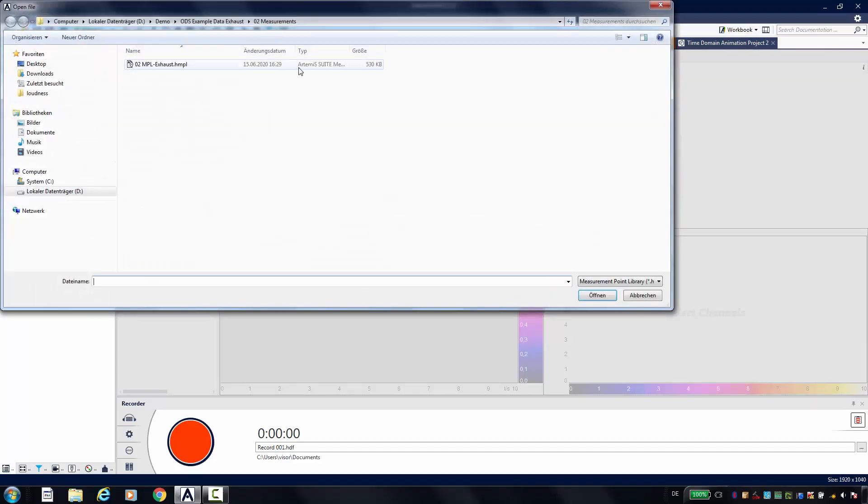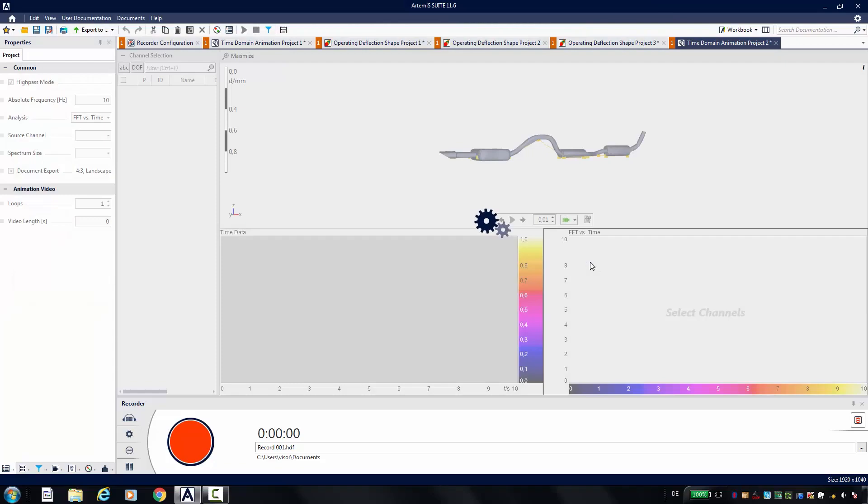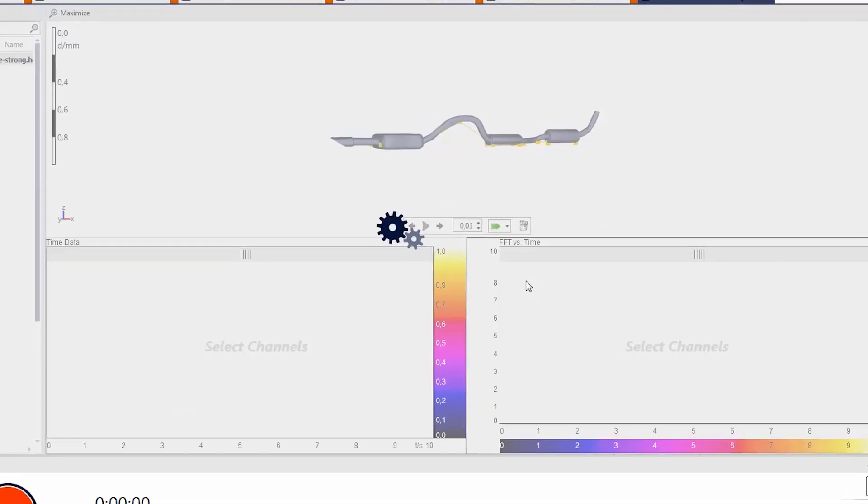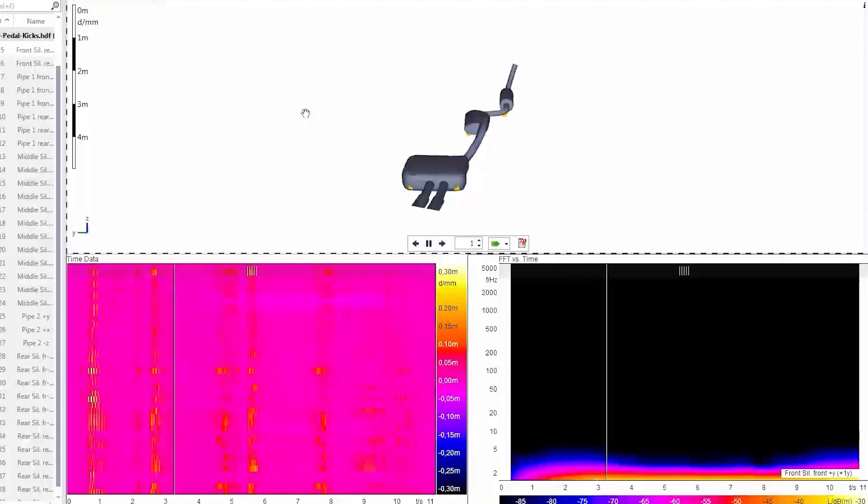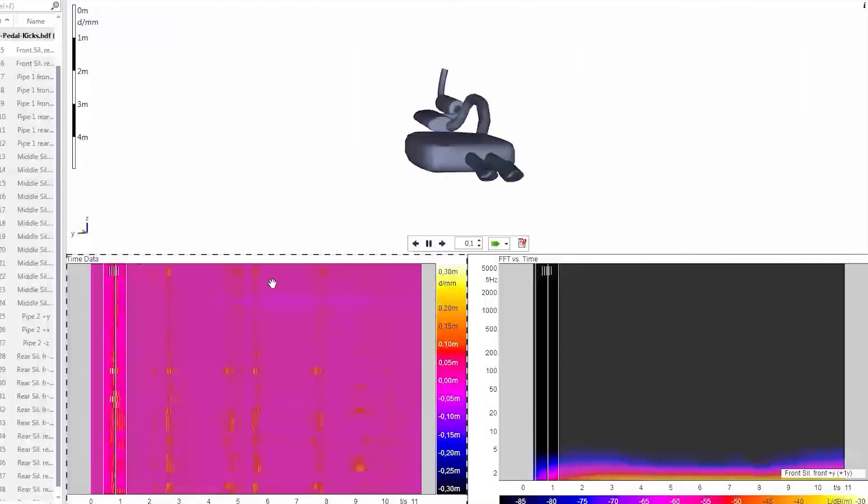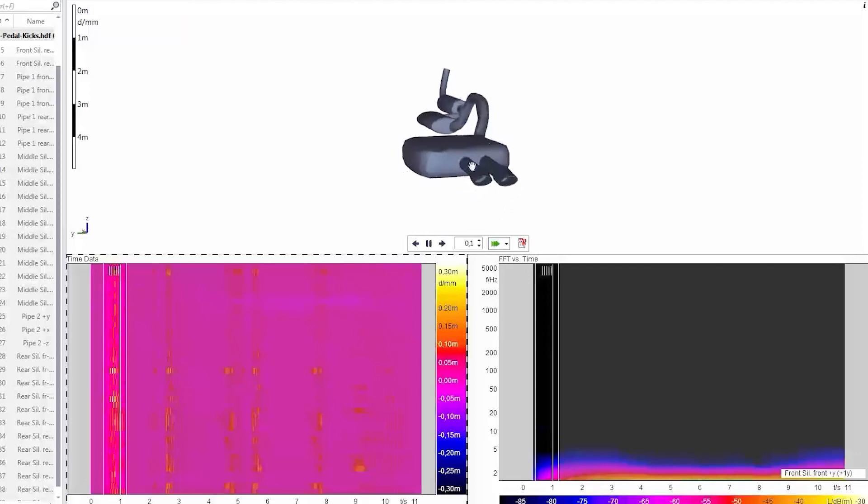Select your model, select the measurement, wait a moment, and click play. These are now the load changes here. Now I can see the deflections because they are displayed much larger and I can play them back more slowly.